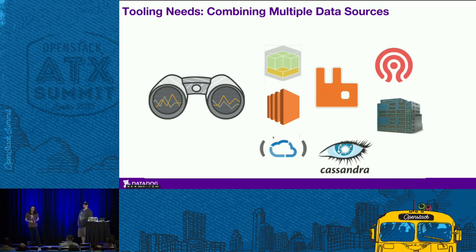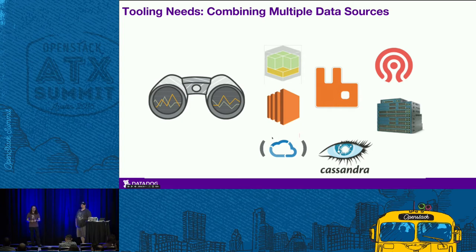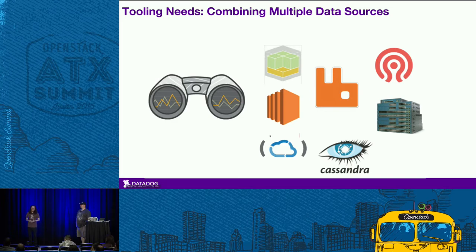We also need a way to look at data from all these different places. Mike mentioned they're using SolidFire; you might be looking at Ceph. You probably have hardware underneath all of this — Cisco or Juniper switches, maybe some Cumulus gear, RabbitMQ, Cassandra, Contrail for your networks. And you're probably in some public clouds too, like AWS EC2, GCE, or Rackspace. Being able to look across your infrastructure and applications across all these different providers in a single set of dashboards and alerts is important.